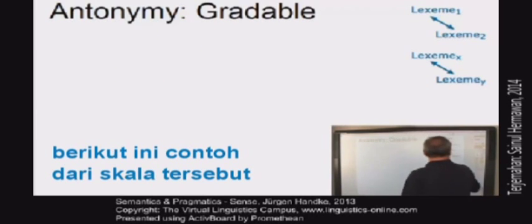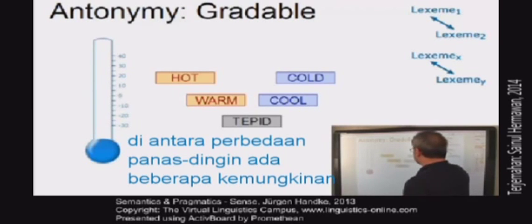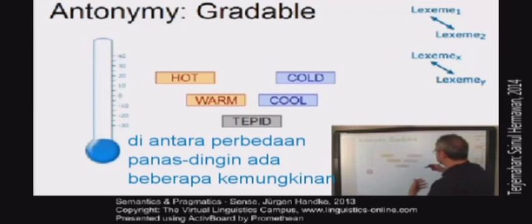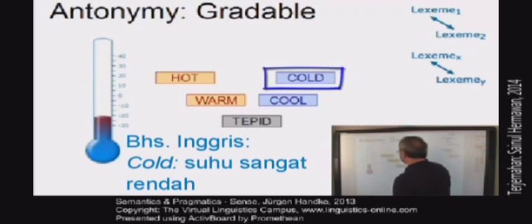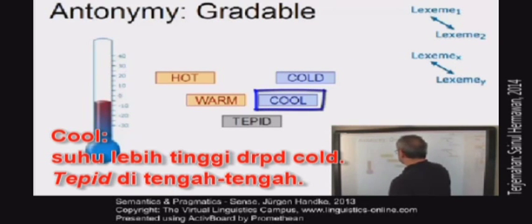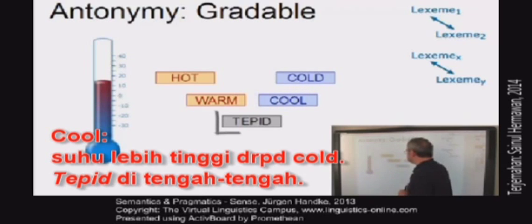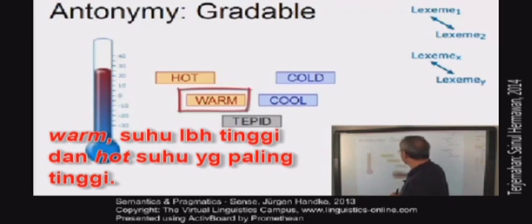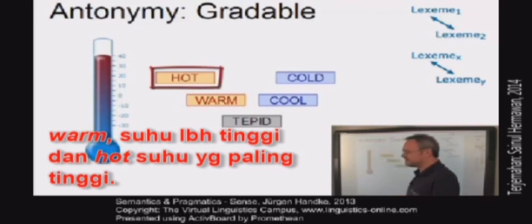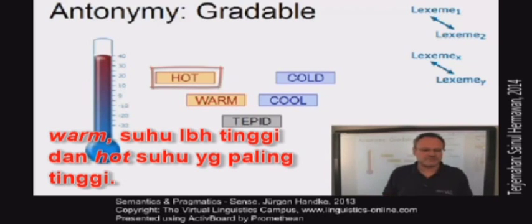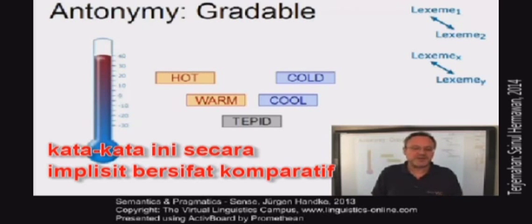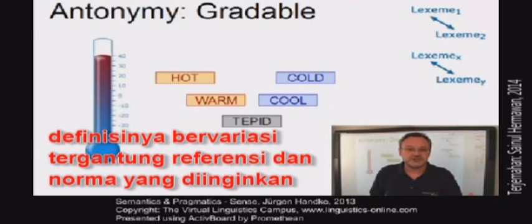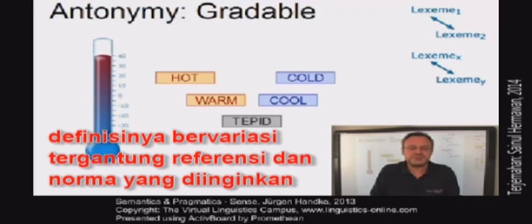Here is an example of such a scale. We have the antonyms hot and cold, but between them there are several possibilities. Cold is a very low temperature. Cool is a bit higher. Tepid is somewhere in the middle. Warm is even higher and hot is the highest of these terms. The items are implicitly comparative terms and their definition varies according to the referent and according to the norm against which the referent is being assessed.